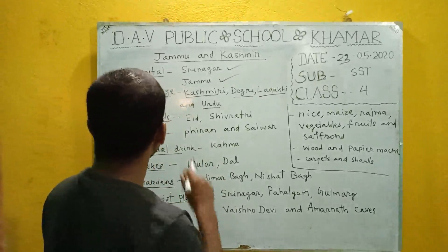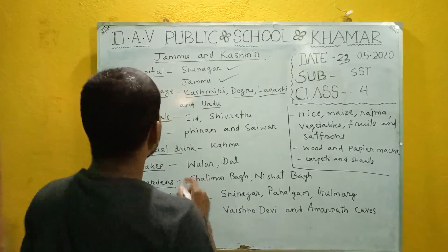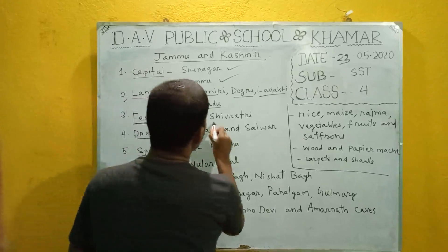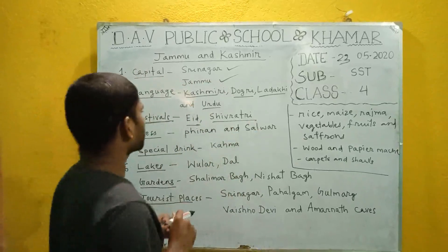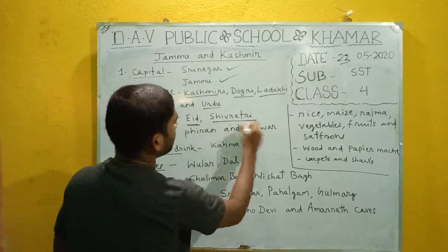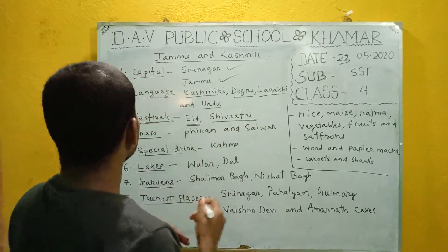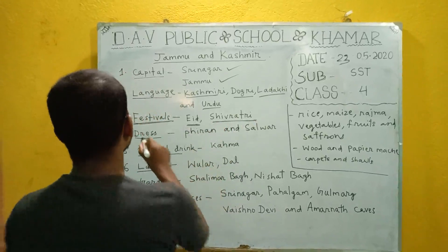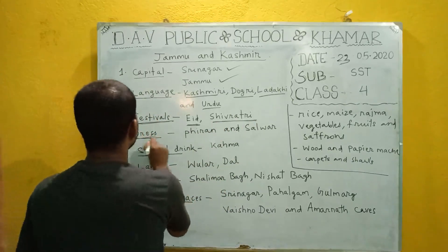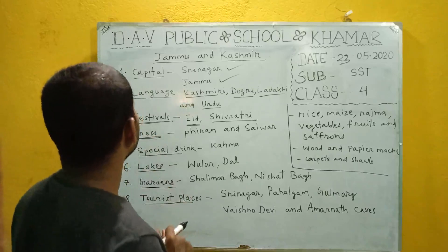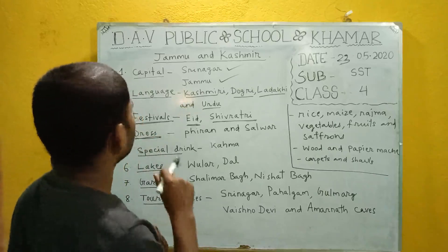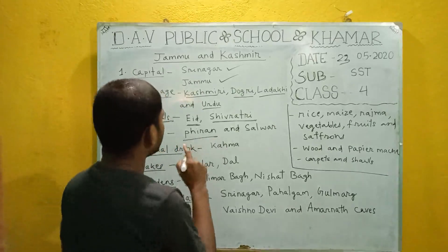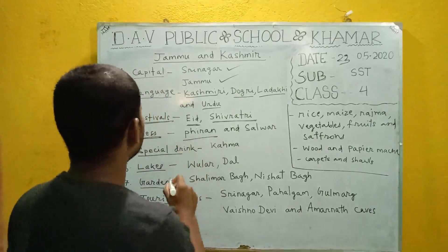Festivals: the people of Jammu and Kashmir majorly celebrate Eid and Shivratri. Dress: the people of Jammu and Kashmir wear Pheran, a type of woolen dress.